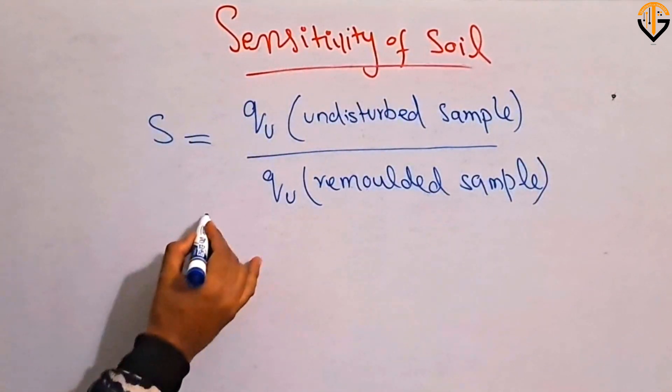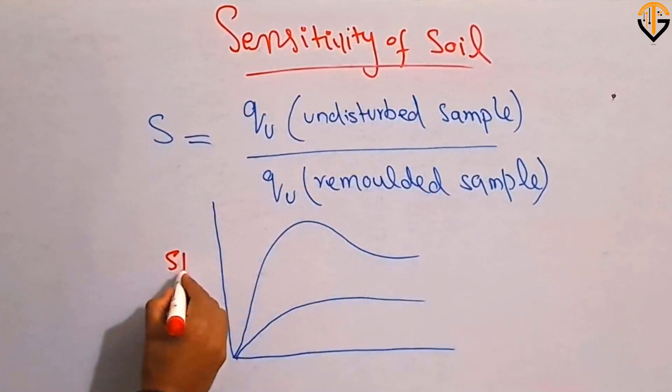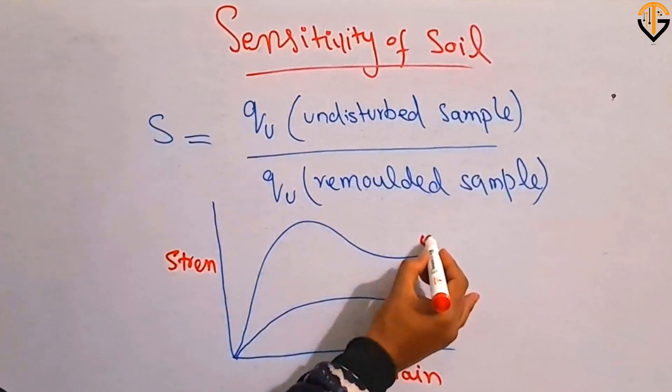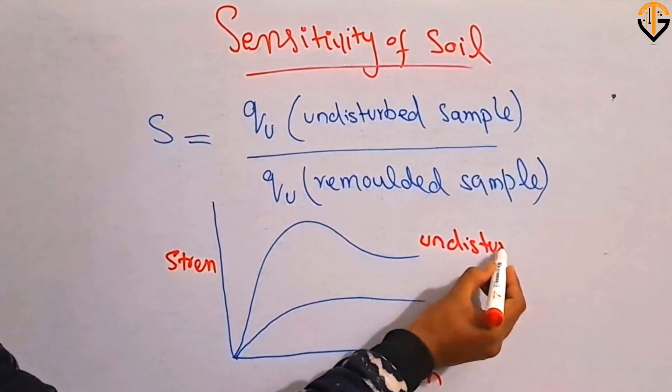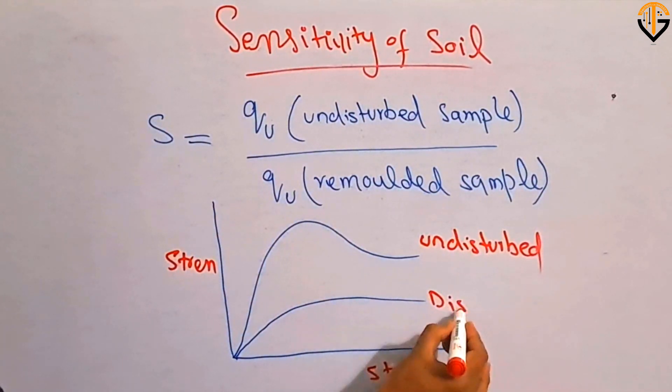It can be further explained as if the stress-strain curve of undisturbed sample is like that and the stress-strain curve of remolded sample will be like that. Stress versus strain behavior of undisturbed and disturbed or remolded sample.